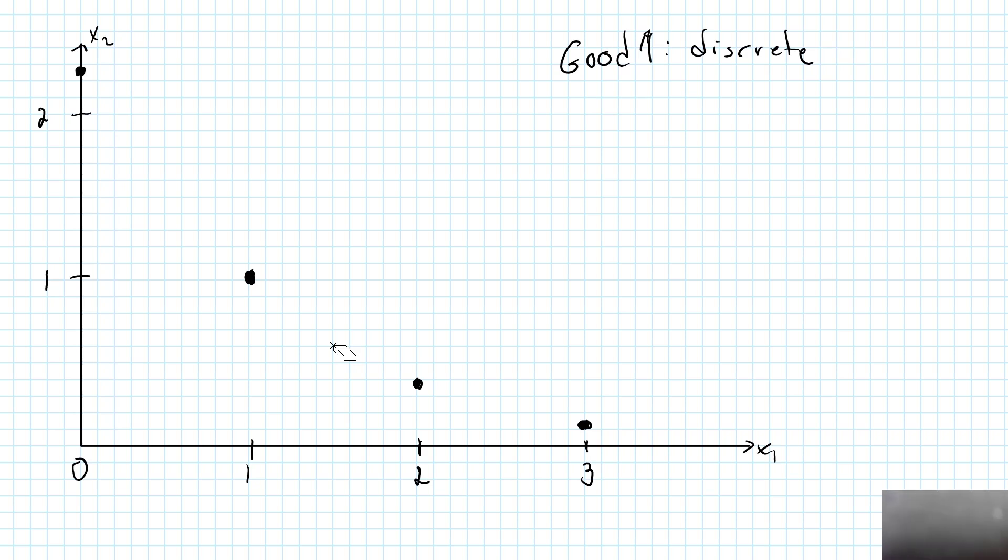Note that we lose this important concept of MRS when goods are discrete. There is simply no way of defining a slope given just a single point like this. However, you can still use the approximation MRS is approximately equal to delta X2 over delta X1, as long as you pick delta X1 equal to an integer value.